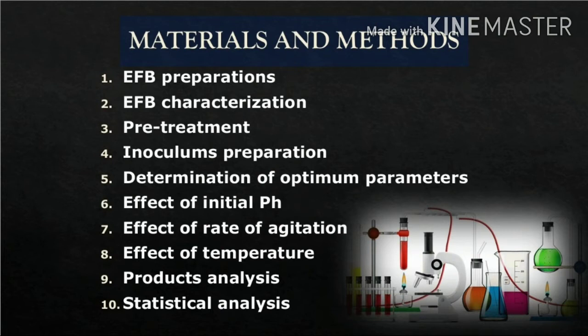Let's move on to the materials and methods, which consist of preparations, characterizations, and parameter determination and analysis. Firstly, we have the EFB preparation whereby a dried bunch is milled, sieved, and separated. As for the EFB characterization, it is done to determine the cellulose using the dry weight method. The third step is the pretreatment whereby EFB is soaked with sodium hydroxide to get the treated EFB, which was then used for fermentation to determine the optimum fermentation process parameters. The inoculum prepared was the standardized Saccharomyces cerevisiae through OD measurement.